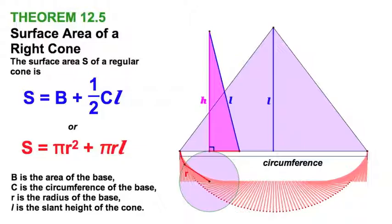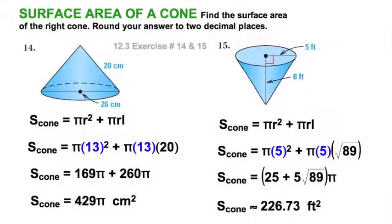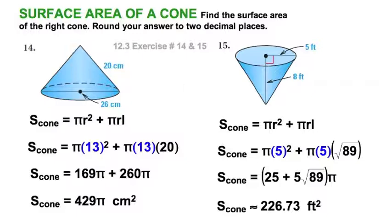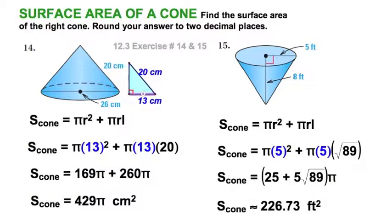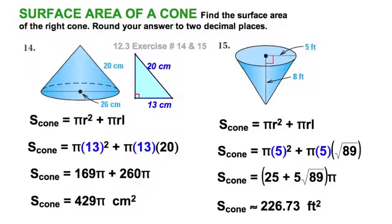Let's do two quick exercises, 14 and 15 — surface areas of two given cones. For number 14, it's pretty straightforward with no detail left out. Remember, you are given a diameter, so you need a radius. If drawn to scale, the radius would be 13. The slant height is 20 centimeters. So we take our original equation and perform our substitution.